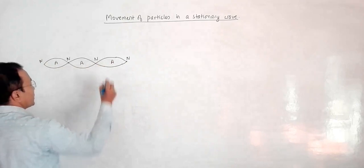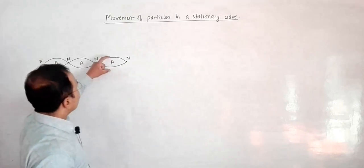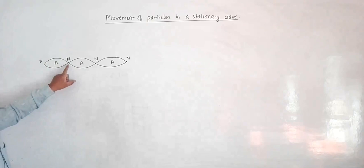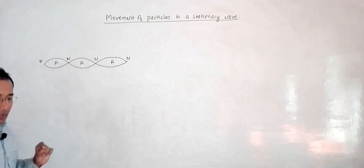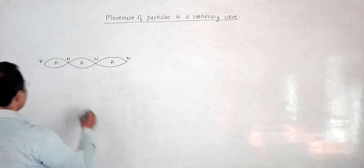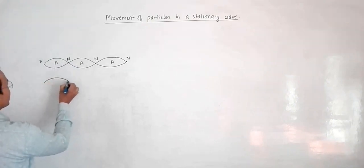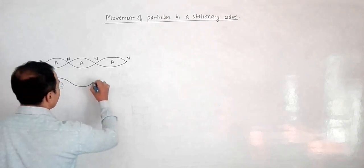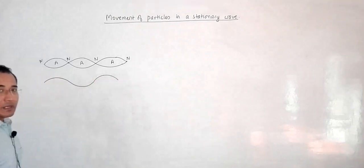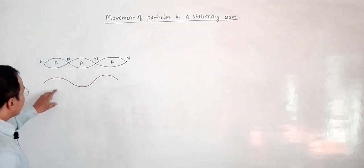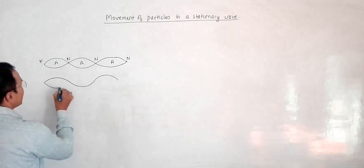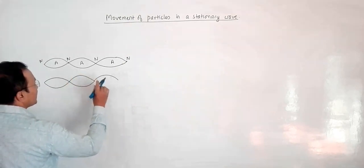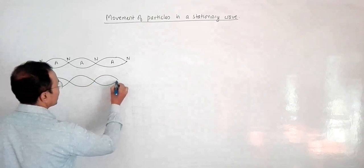The particles at the antinodes are vibrating with the highest amplitude, and the particles toward the nodes will have less amplitude. Now, one thing you have to know is that when the particles in this region are like this, the particles in the adjacent region are like this — they are opposite. And at the mean position, the particles here will be at the center. When these particles descend, those particles have gone up, and vice versa.